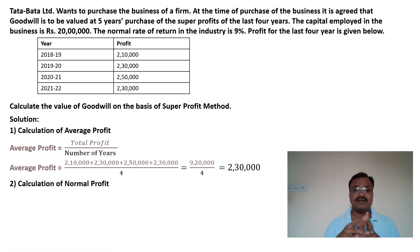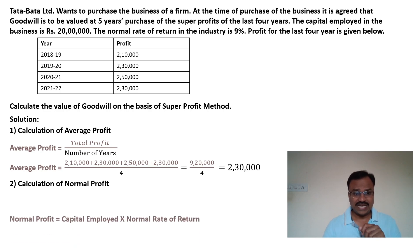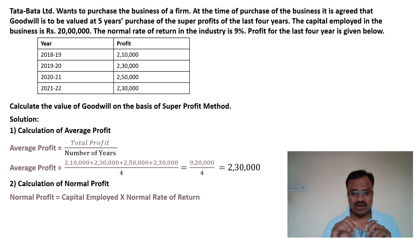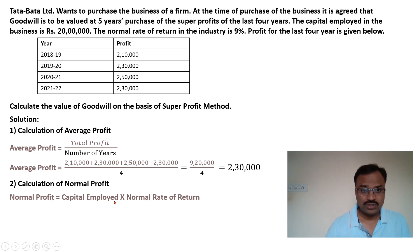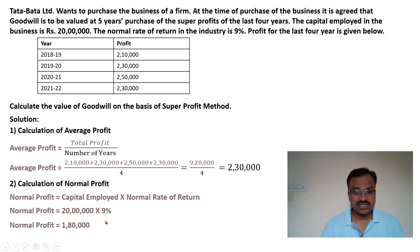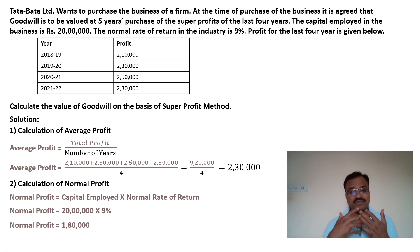In the second step we calculate normal profit. The formula is: normal profit = capital employed multiplied by normal rate of return. The normal rate of return is the minimum rate of return expected in the industry. Here, capital employed is Rs. 20 lakh and normal rate of return is 9%, so 20 lakh × 9% = Rs. 1,80,000.